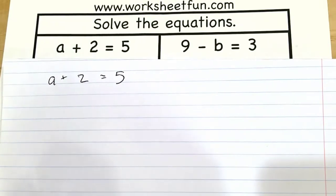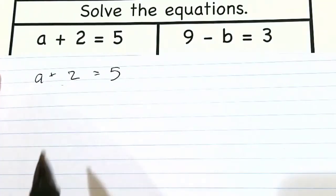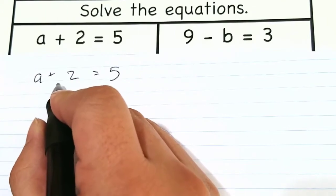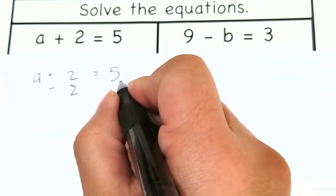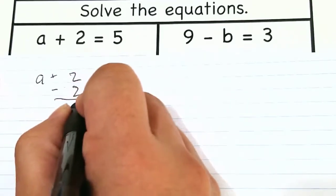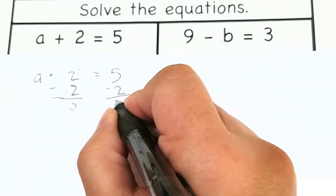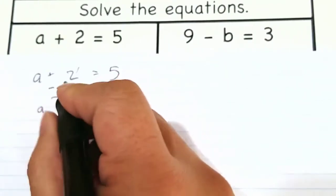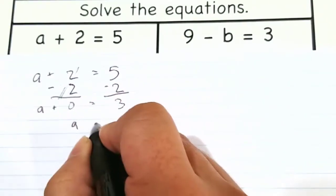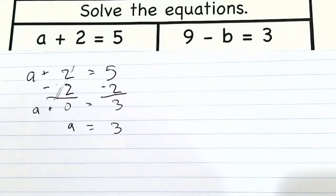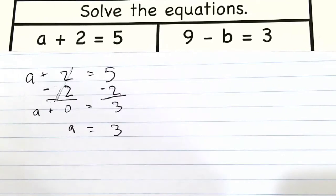Another way we can do this is mathematically. If you want to make the variable a by itself, you want to move the two to the other side. You do the opposite — in this case it's a plus two, so we subtract two on both sides. On this side the two disappears and becomes zero; on the other side we have three. So a plus zero is a, therefore a is equal to three.